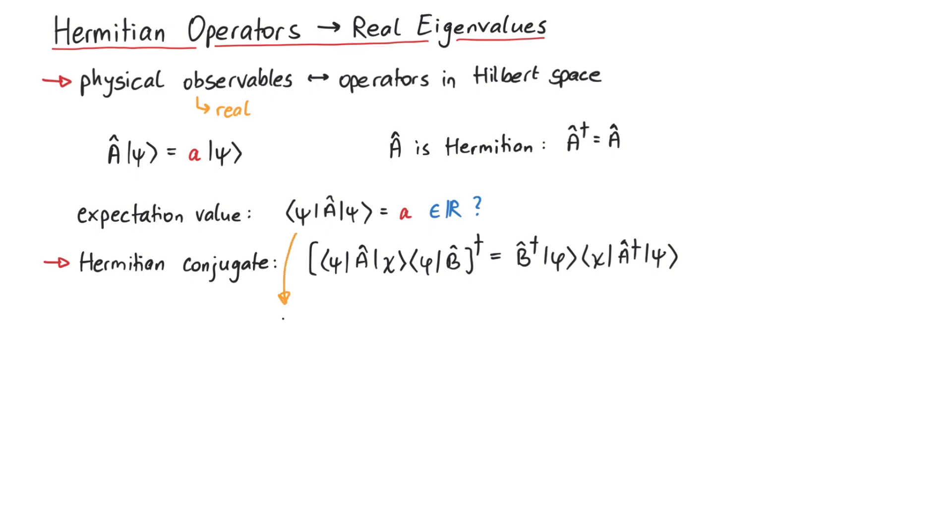Therefore, the left-hand side almost looks the same since we had psi in both the bra and the ket state. Because numbers like the eigenvalue a cannot be transposed, we only perform a complex conjugation.